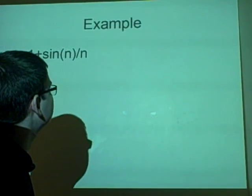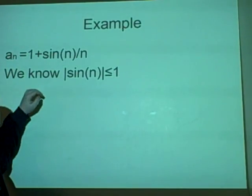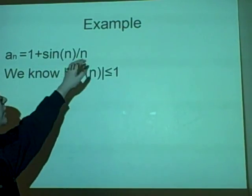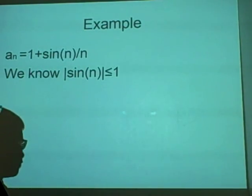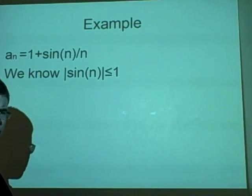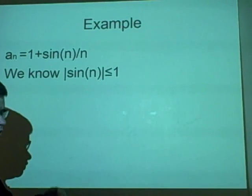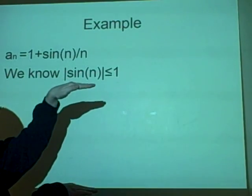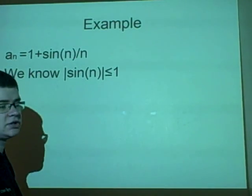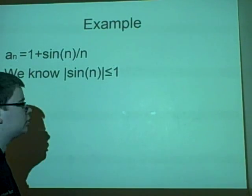And we have a quick example. Right now, we have our sequence as an = 1 plus sin(n)/n. And what we know so far is that sin(n) is going to always be between 1 and minus 1, because they're the limits. So we can say the modulus of sin(n) is always less than or equal to 1, which is perfectly reasonable.